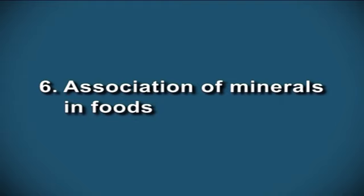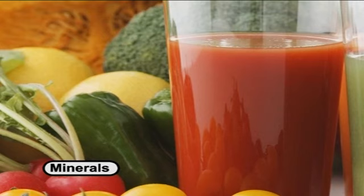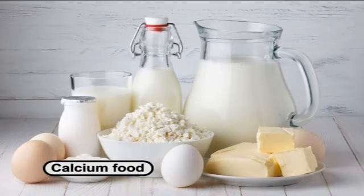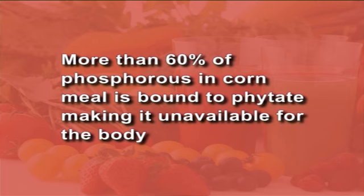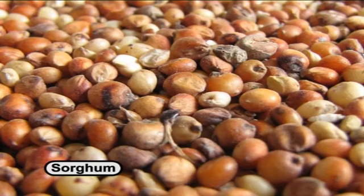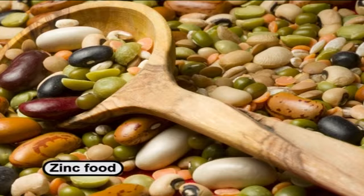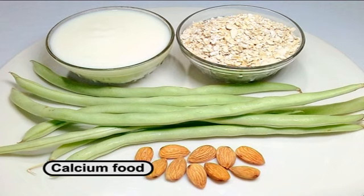Now we know about association of minerals in foods. Many cereal-based foods contain minerals such as phosphorus, zinc, iron, calcium, magnesium, manganese, and copper. These are essential components required for human nutrition. Minerals are required to activate enzymes, regulate the pH of body fluids, and maintain osmotic balance between the environment and the cells. Deficiency of minerals can lead to severe metabolic disorders. More than 60% of phosphorus in corn meal is bound to phytate, making it unavailable to the body. Phytate is considered an anti-nutritional factor as it gives a negative effect on mineral uptake from cereal foods like finger millet, sorghum, and corn. It can bind phosphorus, iron, zinc, copper, manganese, and calcium, making these minerals unavailable to consumers.